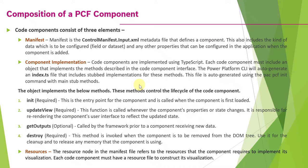The index.ts TypeScript file includes implementation for the lifecycle methods available in it. These methods are: init, updateView, getOutput, and destroy. We will talk about these methods in the upcoming slides of this video, and we will also see them in detail in the subsequent videos of this series. The third important element in a PCF component is resources. There is a resources node in the manifest file which refers to the resources that the component requires — this could be a resource file, a CSS file, or other types of files referred within the resources node of the manifest file.